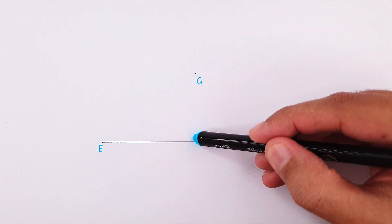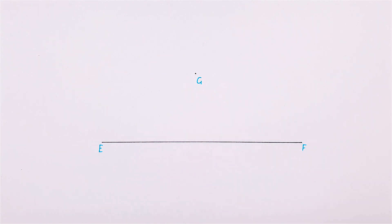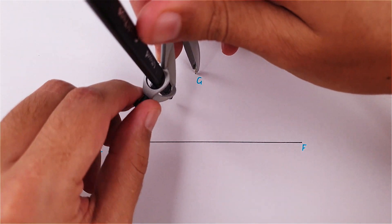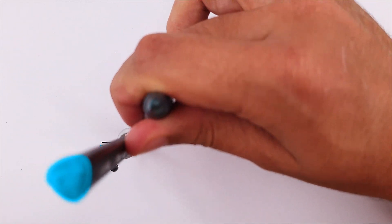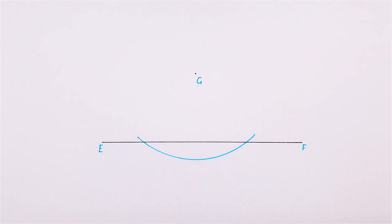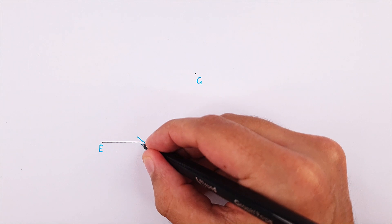In this video we will draw a perpendicular line through a given point onto line EF. Start by placing your compass on point G and draw an arc that will intersect through line EF twice. Label these intersections as 1 and 2.